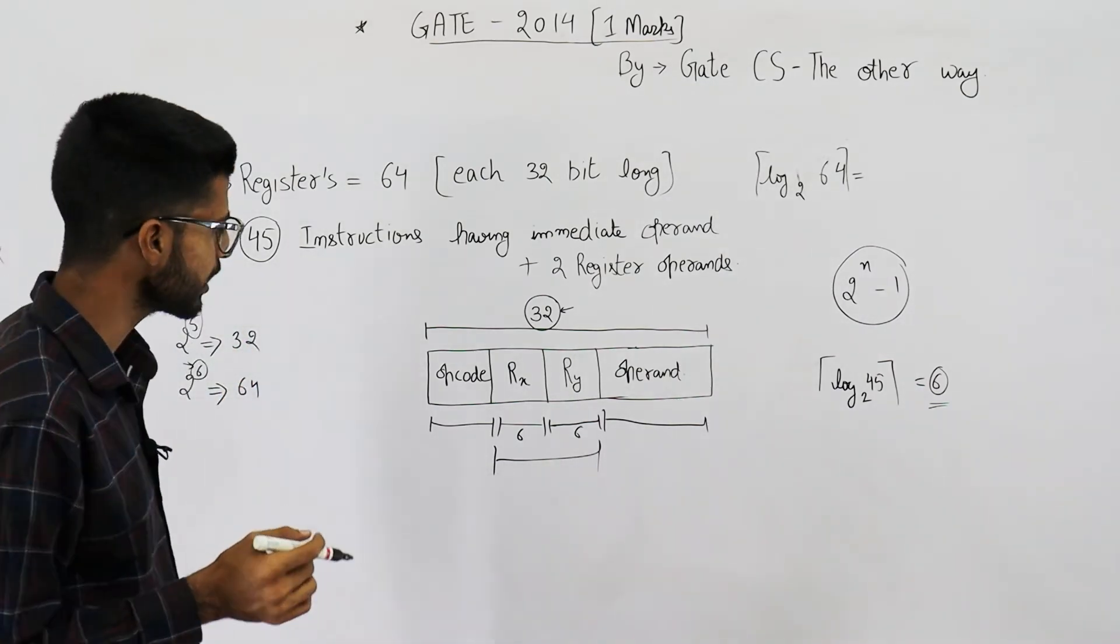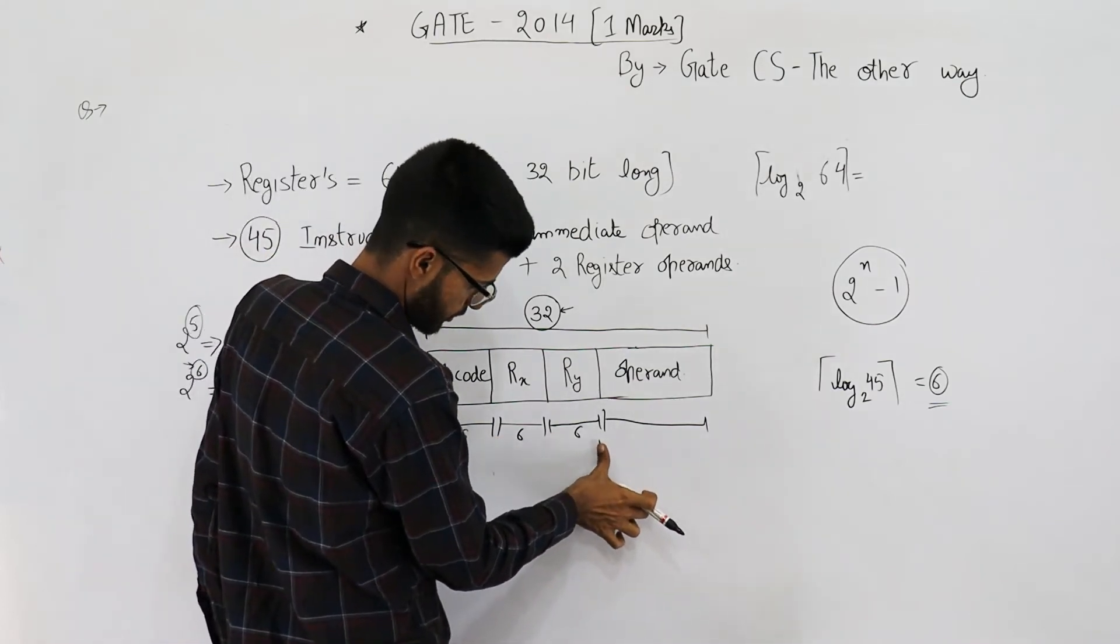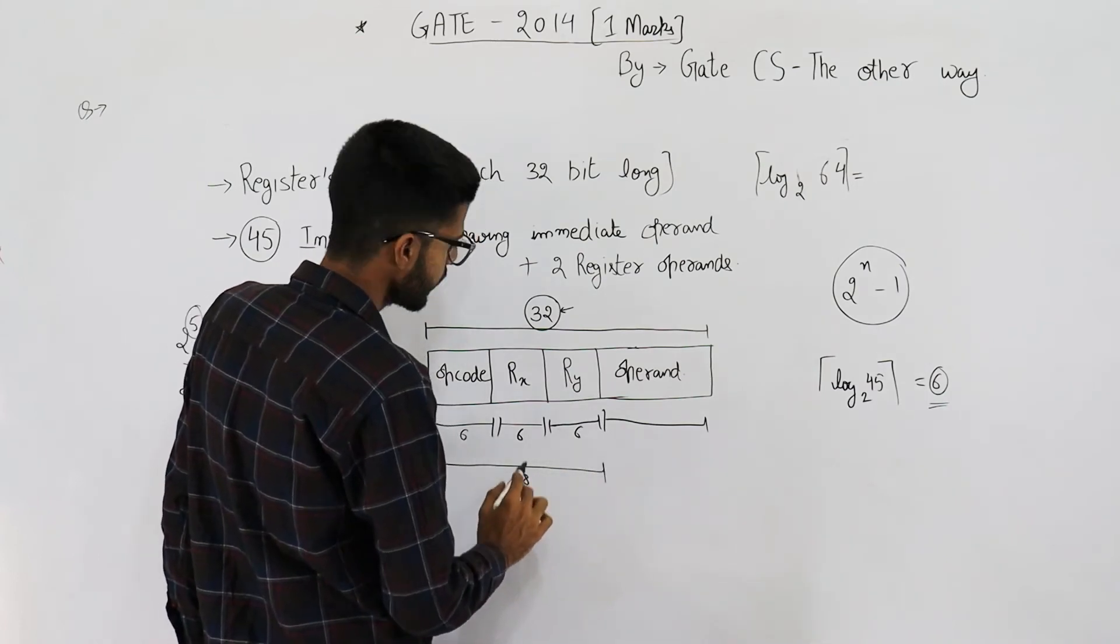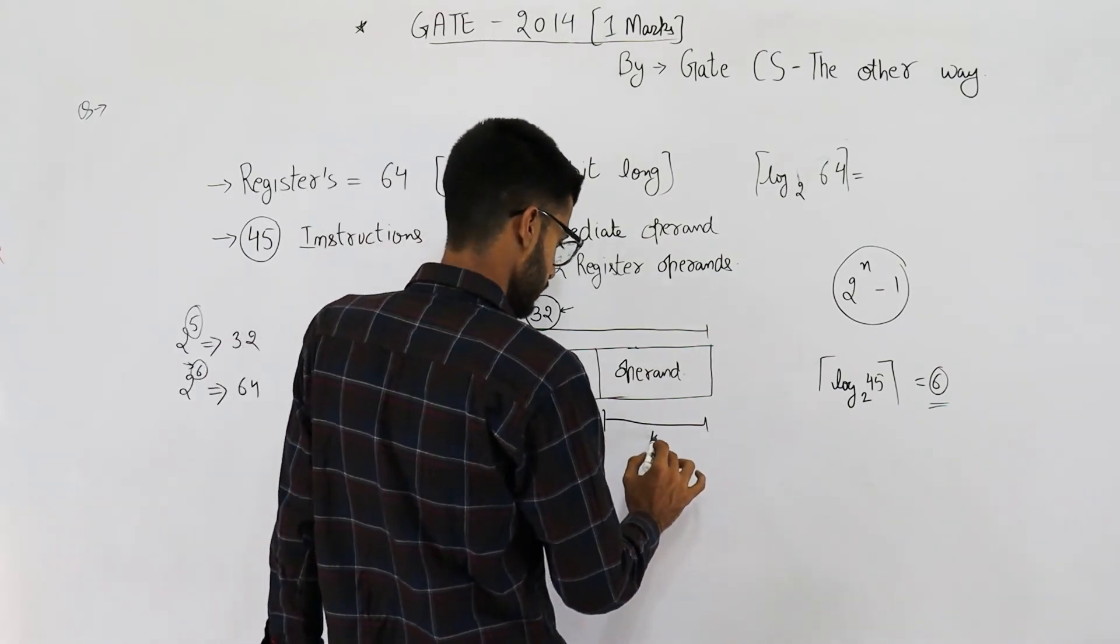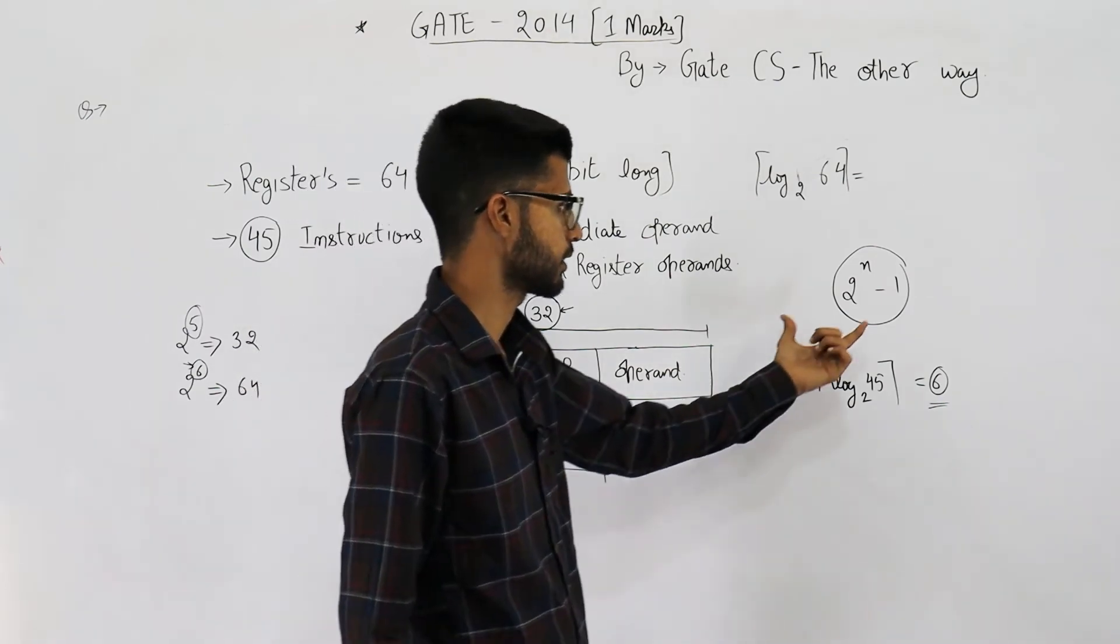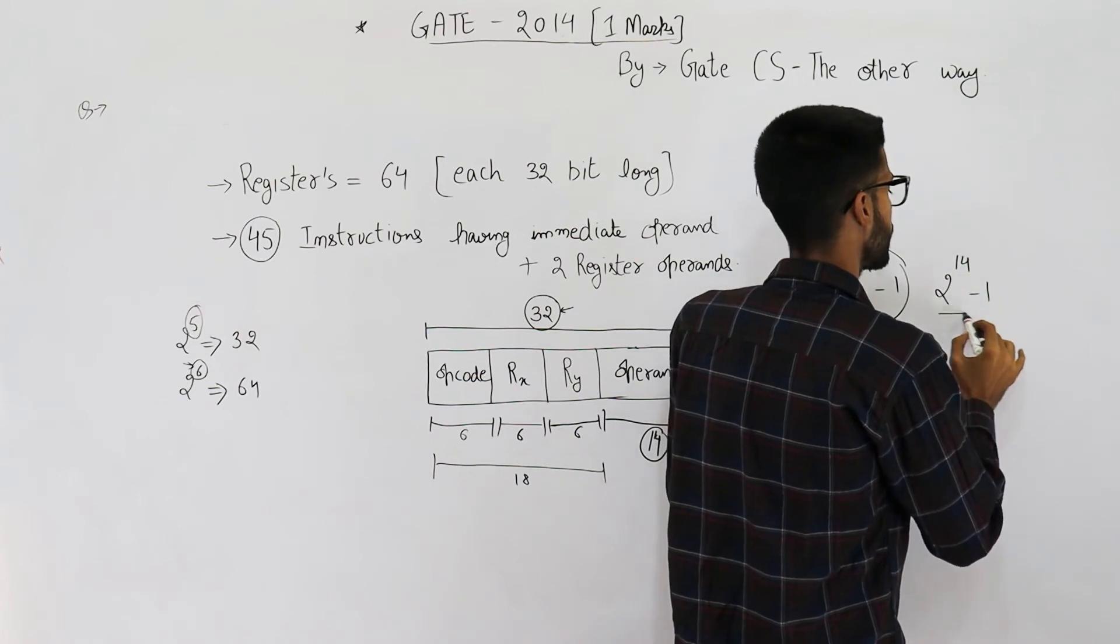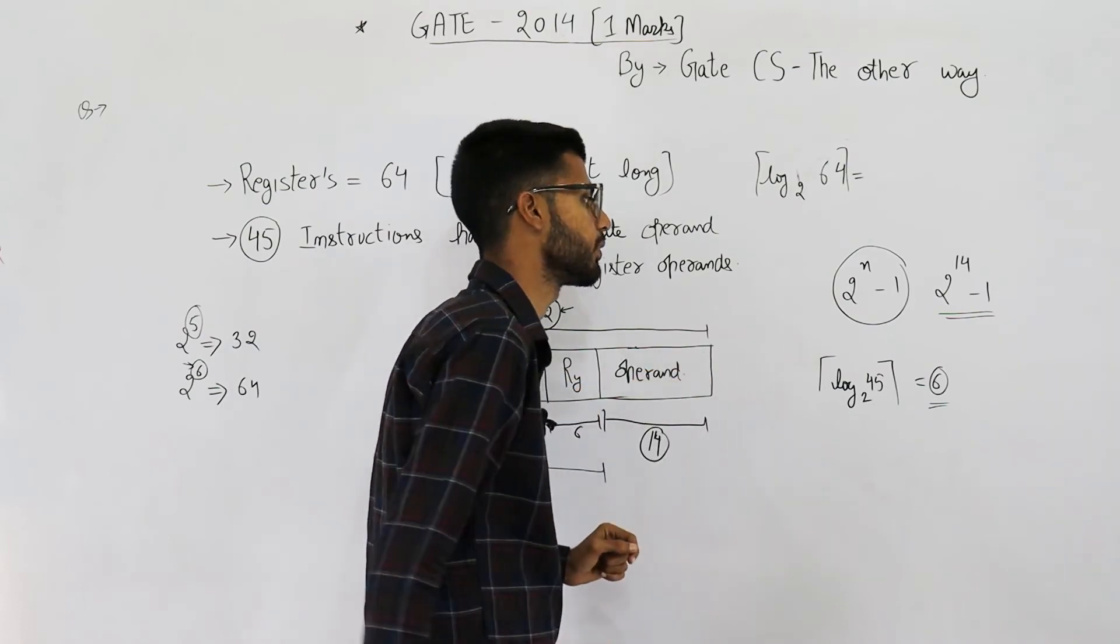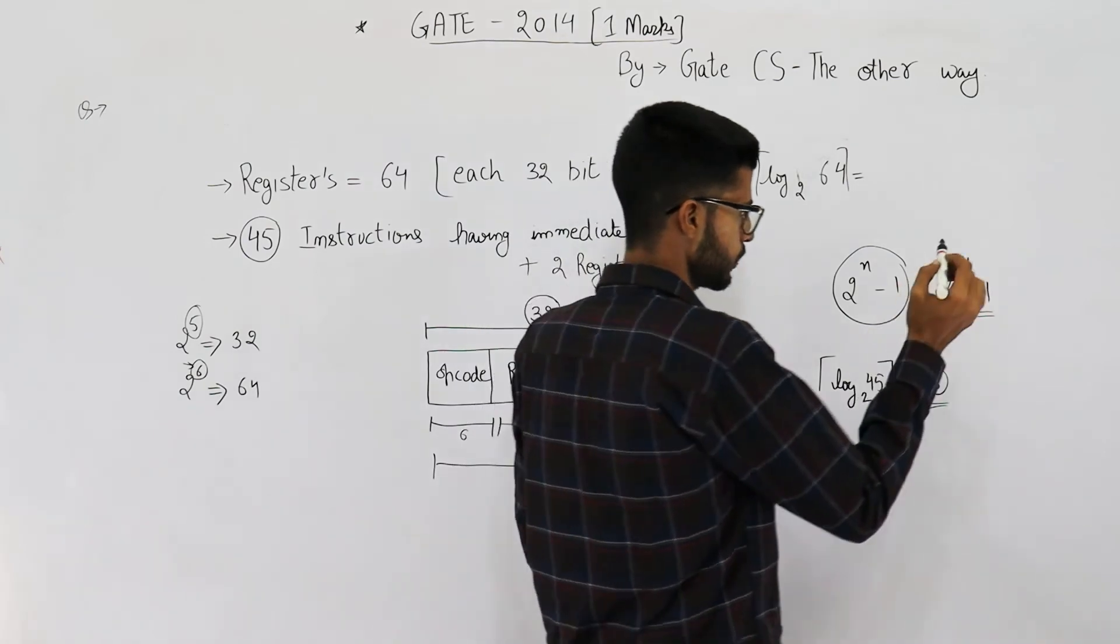Anyways, so this one is also 6, and the total becomes 18. So this part is 18. 32 minus 18 is 14, I guess, yeah. So number of bits in operand is 14. That means our answer is going to be 2 power 14 minus 1.